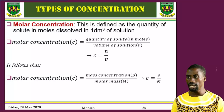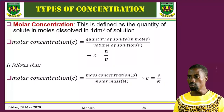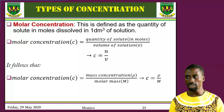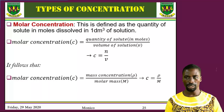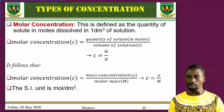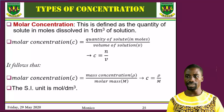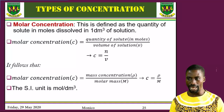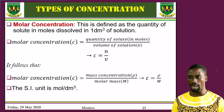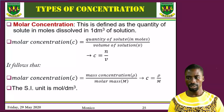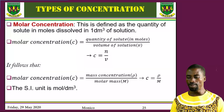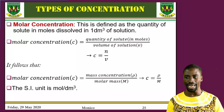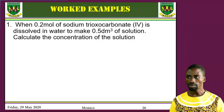There are times you will be asked to calculate any of these — mass concentration, molar concentration, or molar mass — given the other two. The unit of molar concentration is mole per decimetre cube. Sometimes you will see a capital M notation, for example 2M means 2 molar, referring to molar concentration.